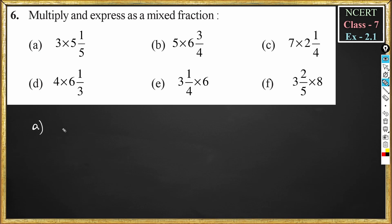Problem number a: 3 into 5¹/₅. You should not multiply directly — that means doing 3 into 5 equals 15 and writing 15¹/₅ is wrong. First, you should convert 5¹/₅ into an improper fraction, then multiply, and then convert that back to a mixed fraction.